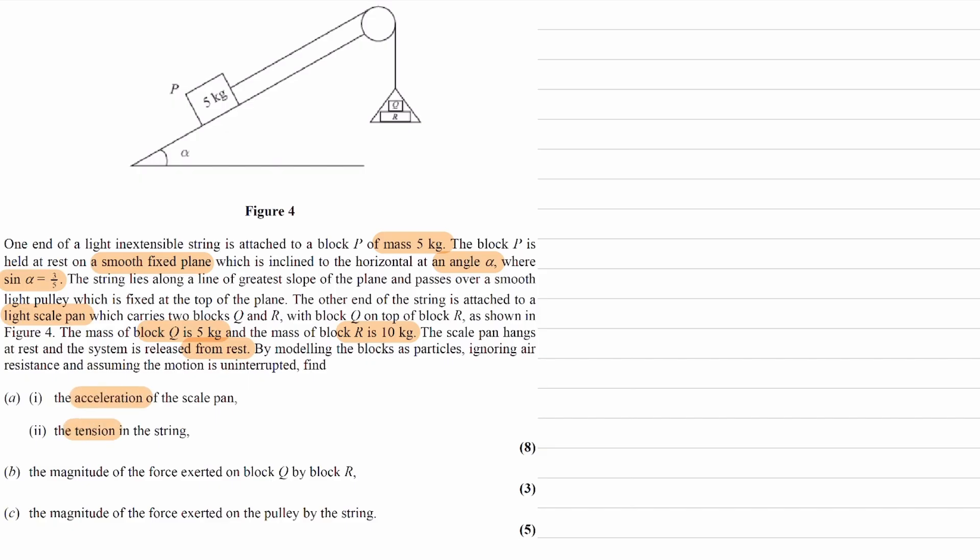Okay, so to start with, we can consider Q and R as one mass. The overall weight force will be 15G. We have our tension forces, so this is T, this is T, the weight of the 5 kilogram mass, 5G.